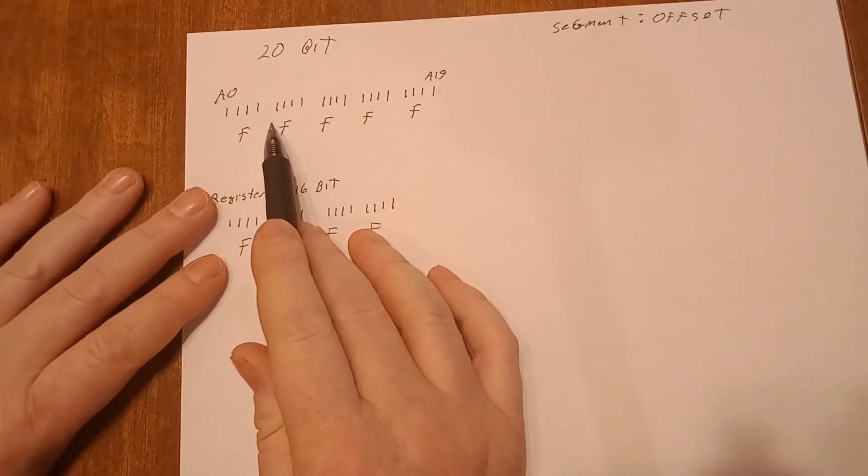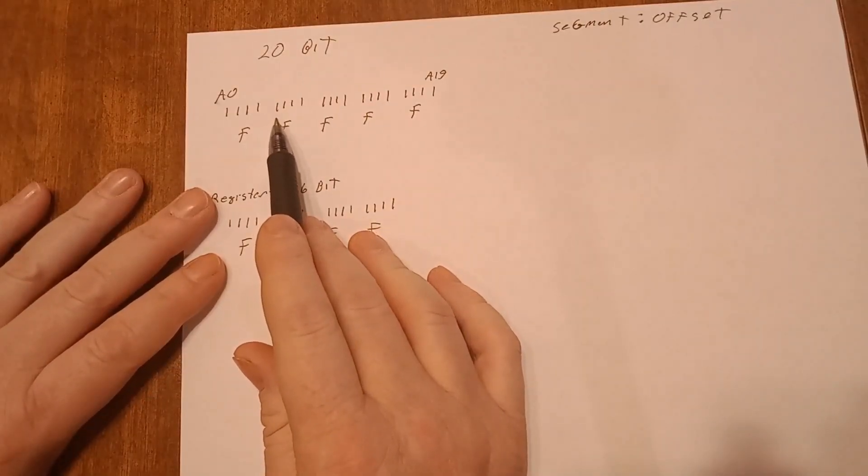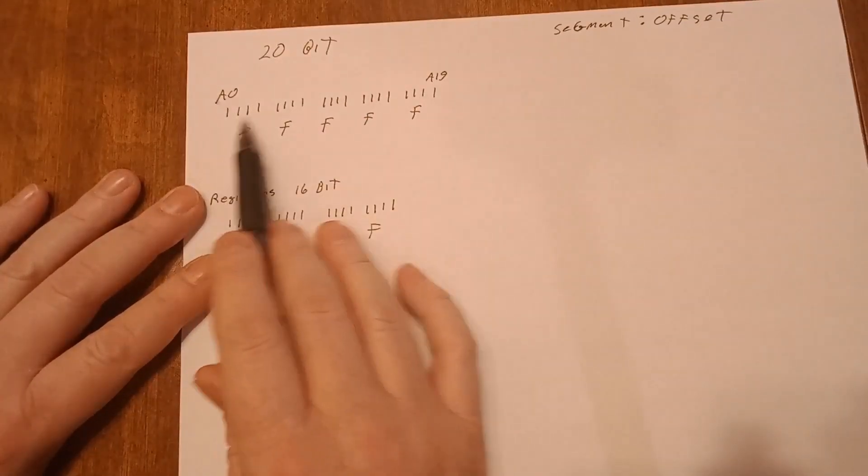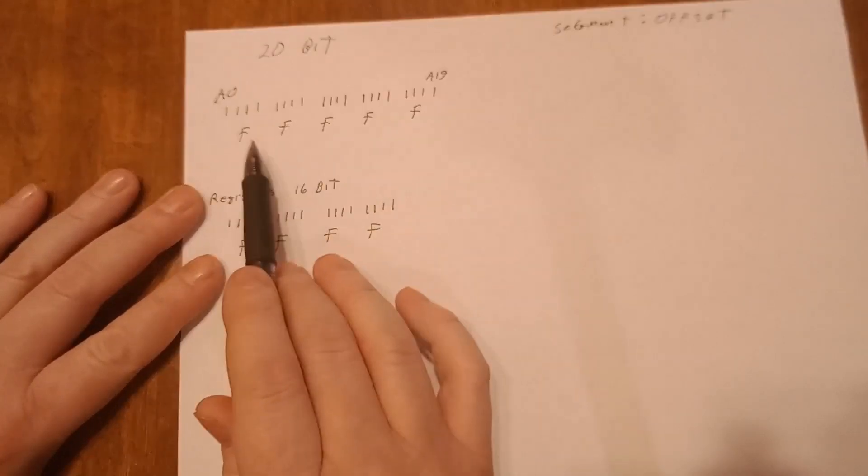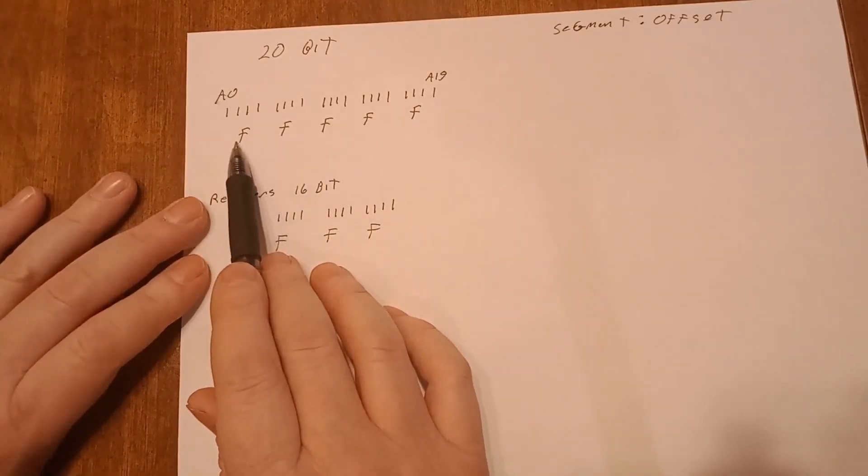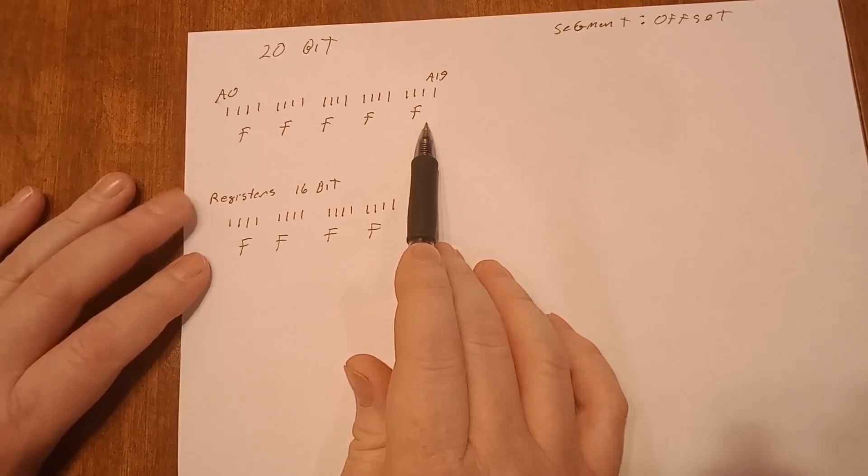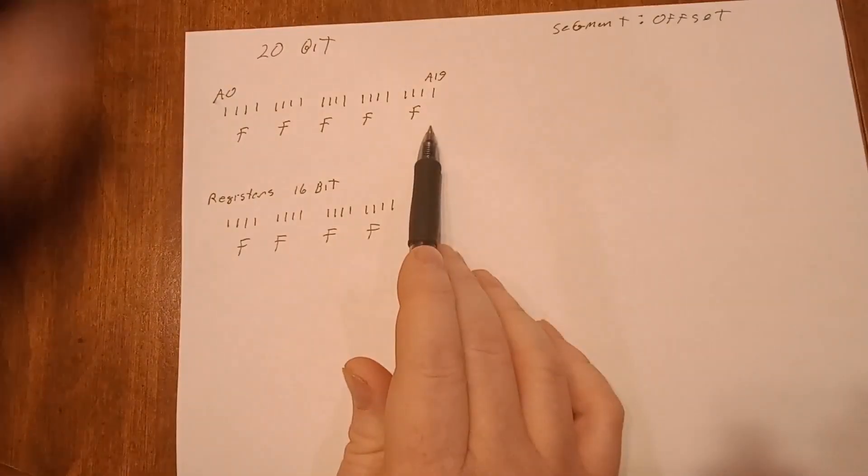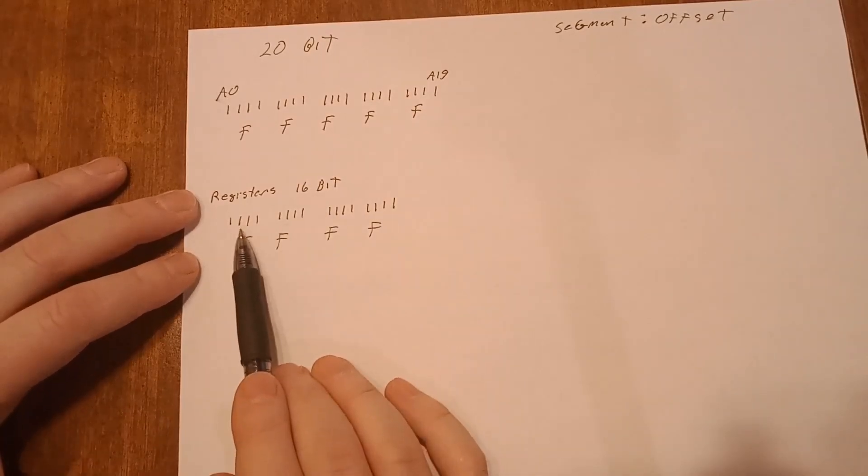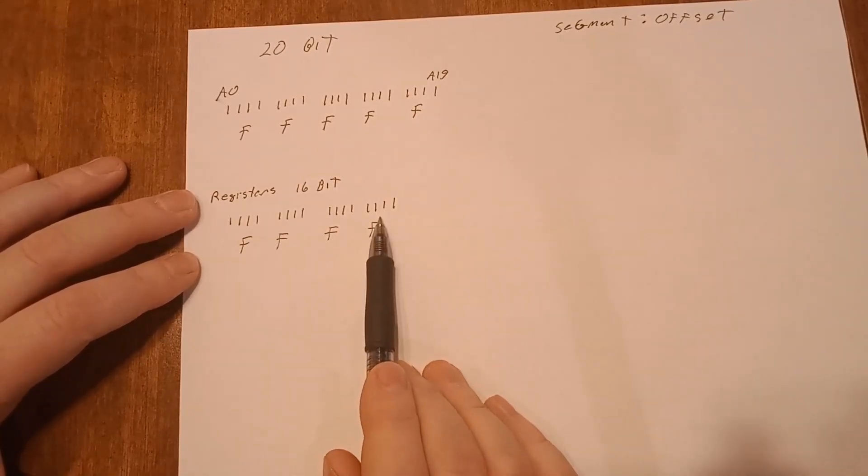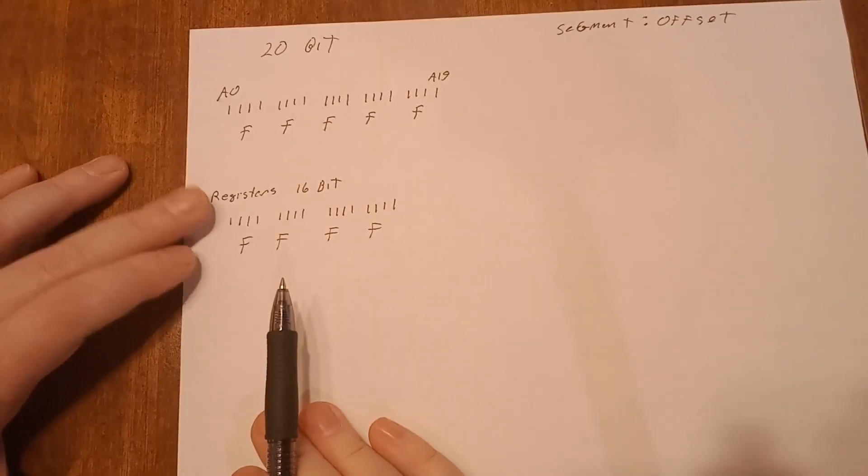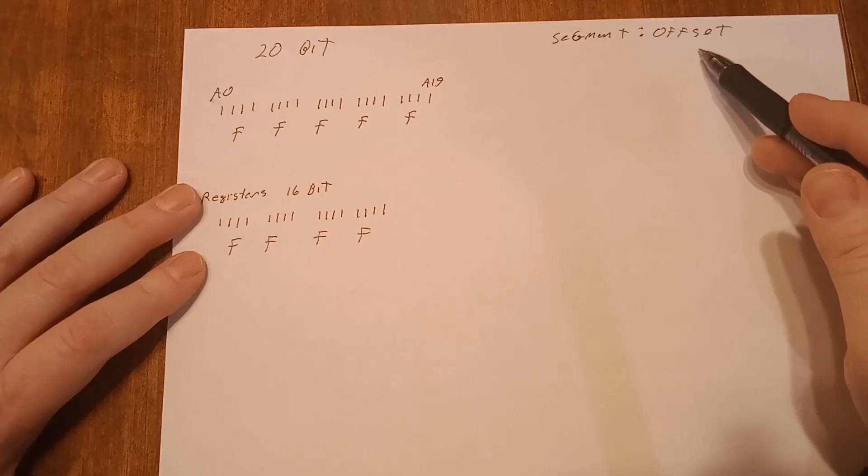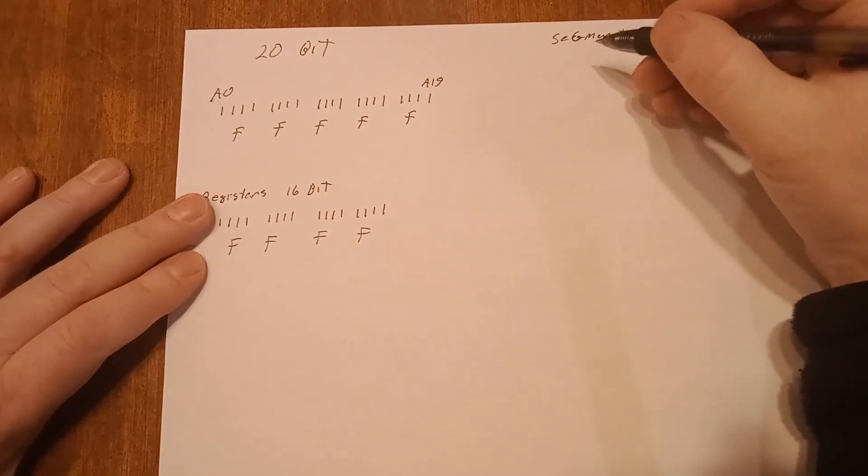So I kind of made some notes here. I've got a 20 bit address. So starting at A0 to A19, kind of broke it up into fours, which gives you in hexadecimal, five Fs. The registers internal to the chip are 16 bit and broke them down 16 digits, four Fs.